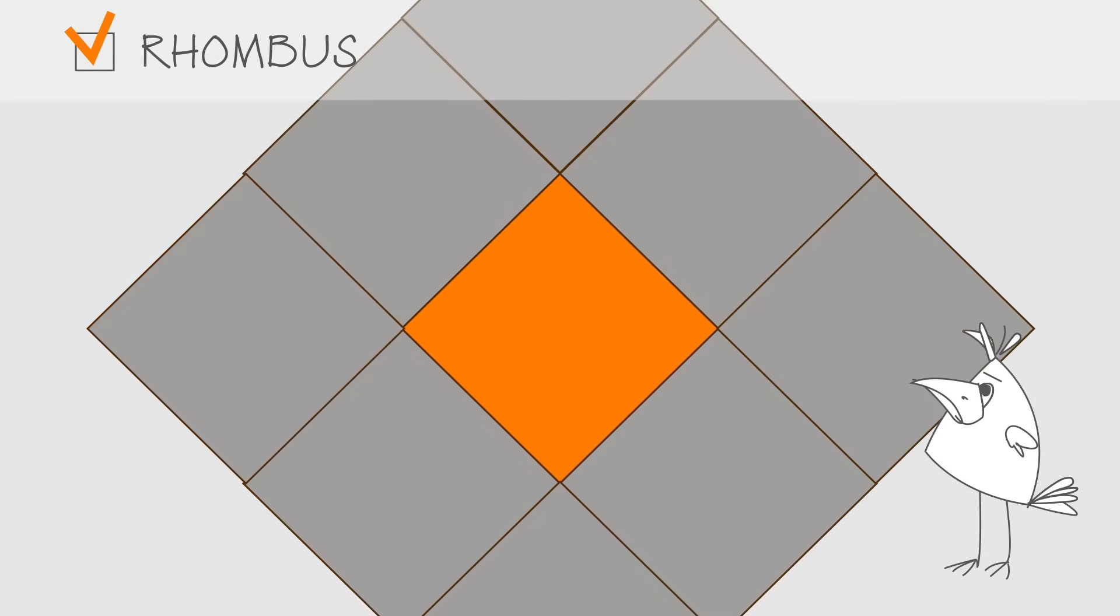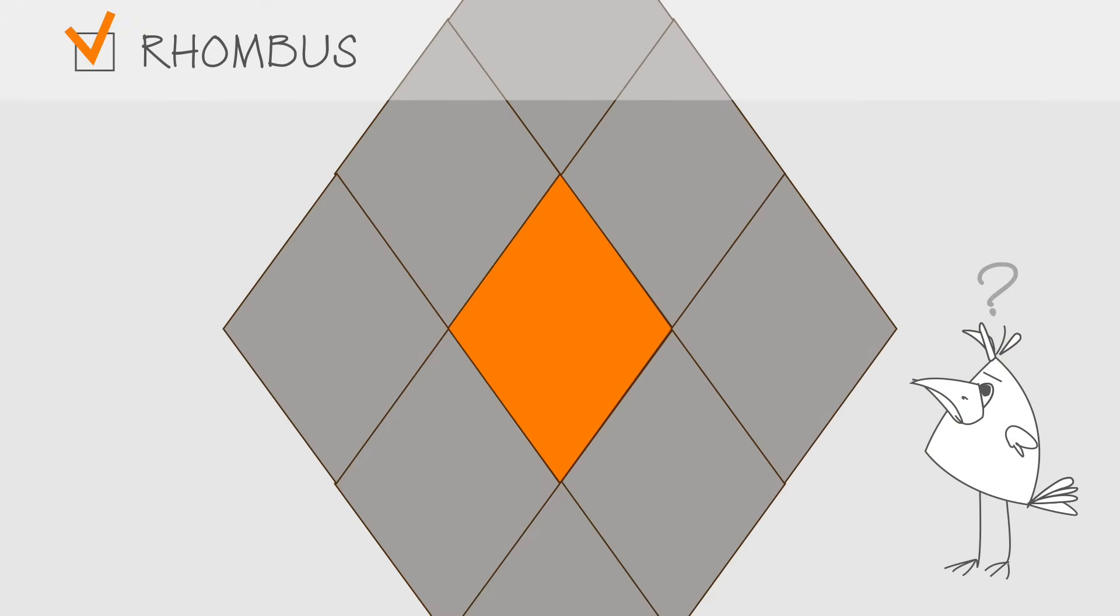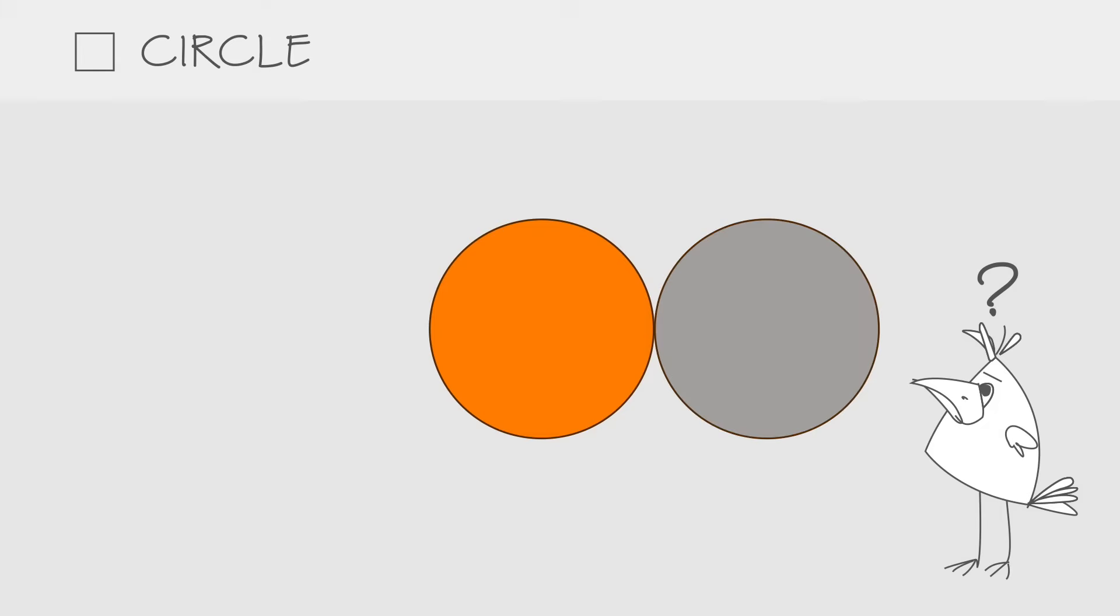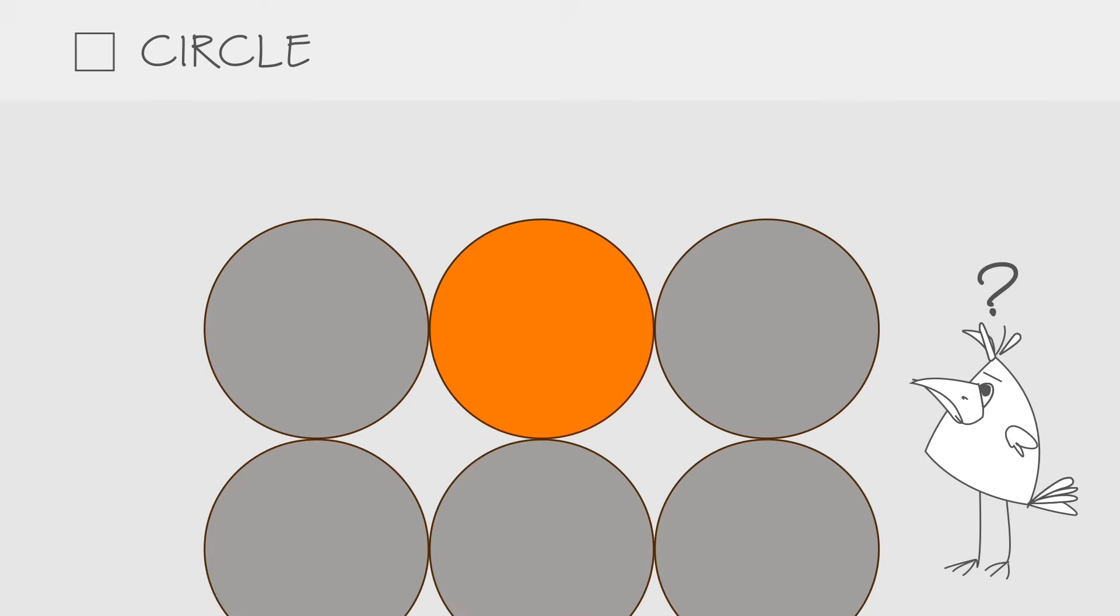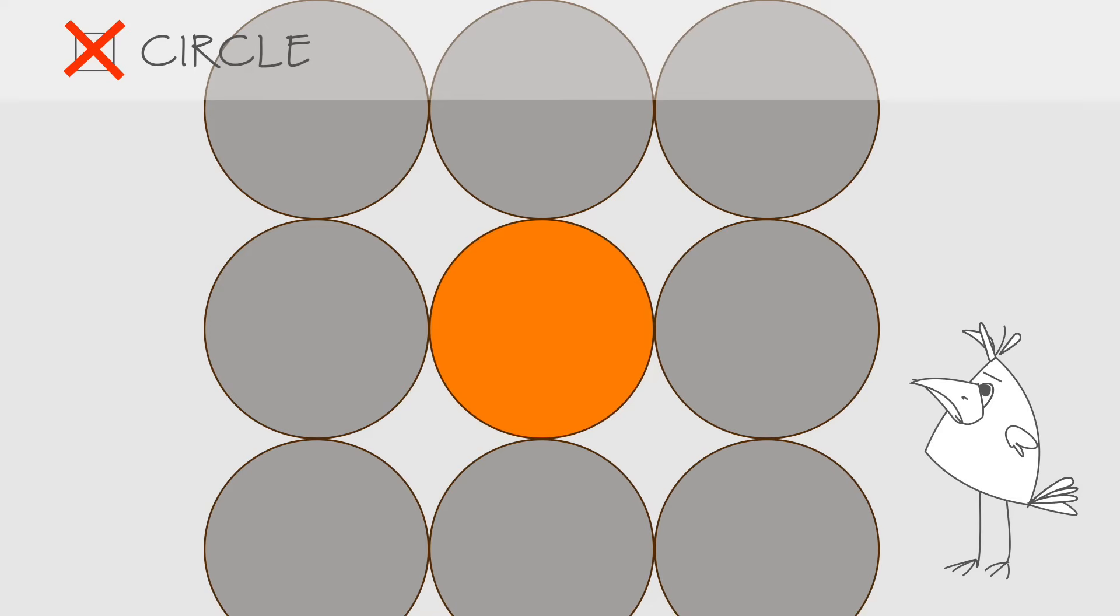What about rhombus? Yes. A circle? Hmm, does not seem to work. All these gaps in between. Unless we add some extra shapes to fill in the empty areas, circle is not going to tessellate by itself.